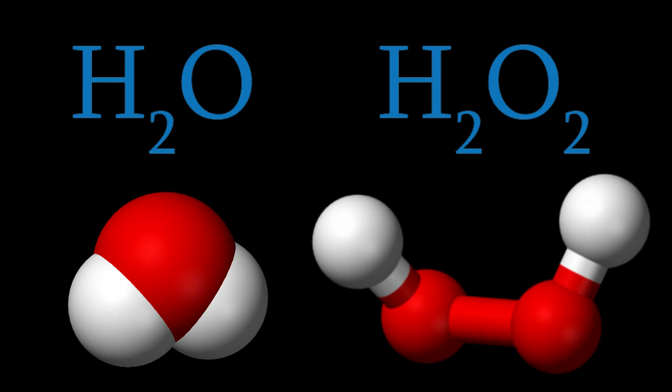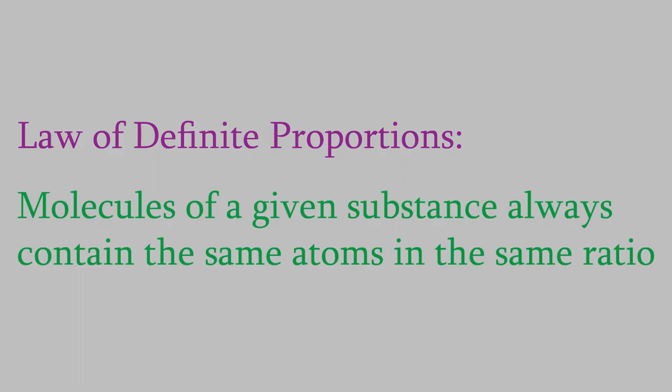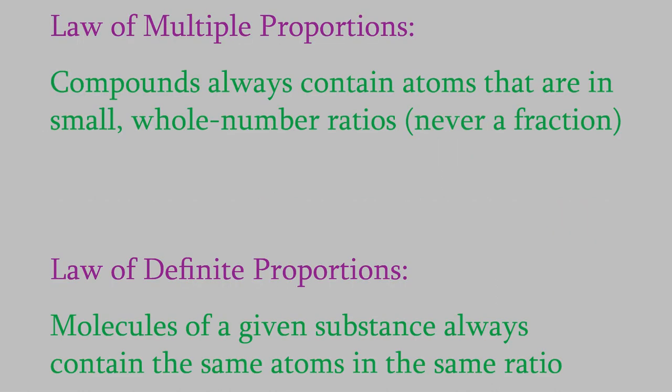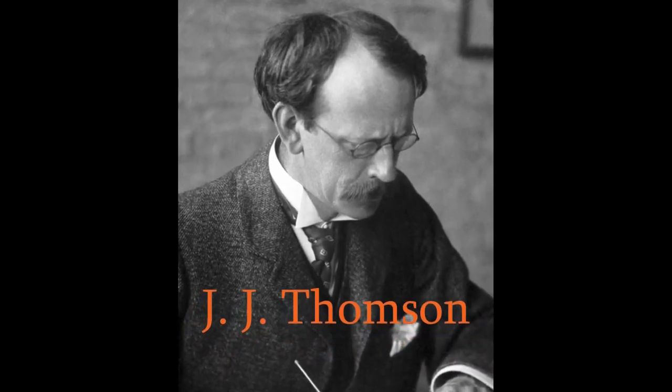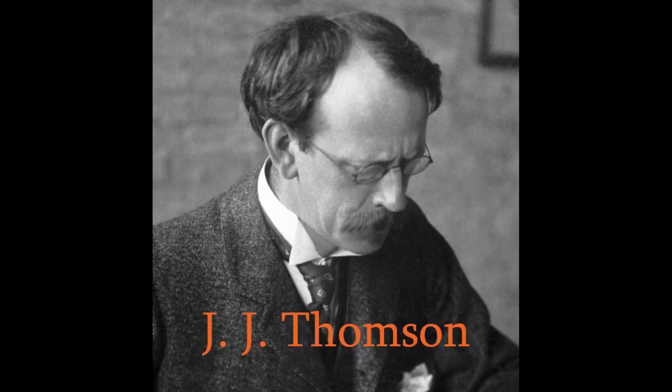This idea that a given compound must always have the same ratio of its elements is called the law of definite proportions. Try not to get it confused with the law of multiple proportions, which we mentioned earlier. After Dalton's work, the next big milestone in atomic theory came in 1897. In that year, J.J. Thompson discovered that atoms contain smaller particles that have a negative charge.